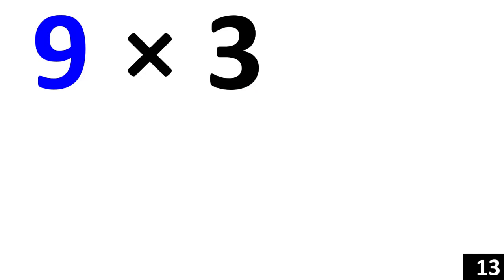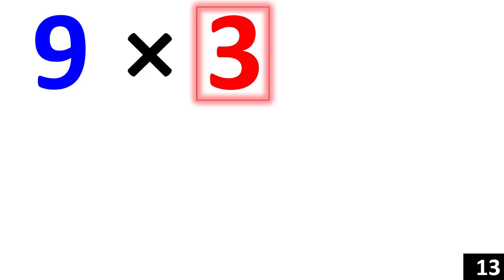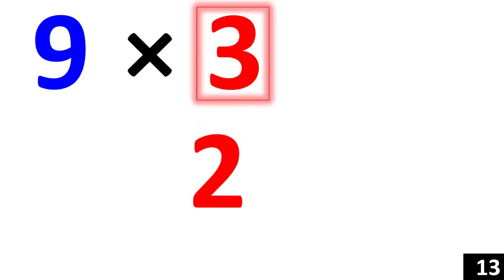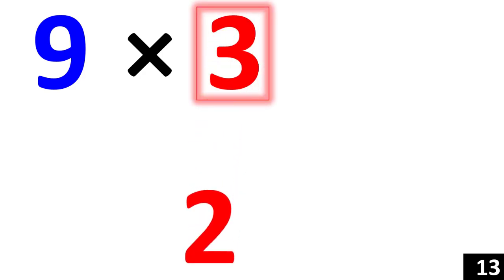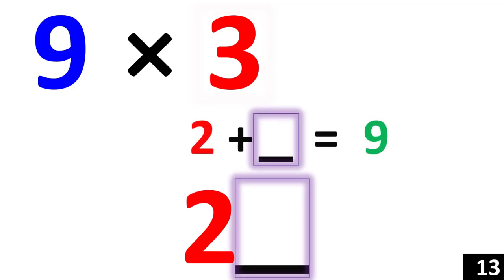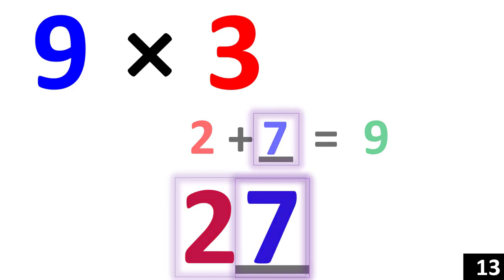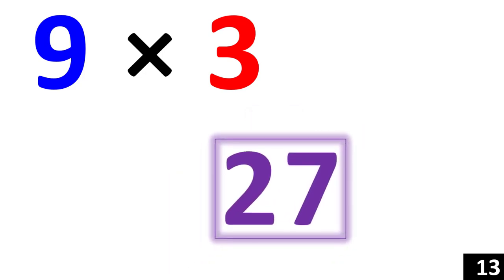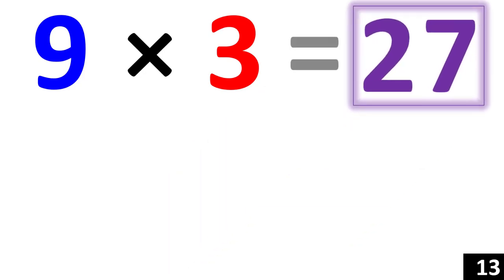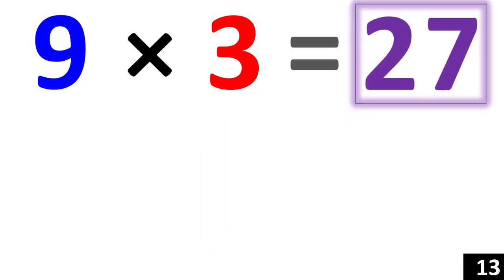9 times 3. Starting from the number 3, 1 less than 3 is 2. Then we say, 2 plus what number would give us 9? 7. So, 7 is your second number and 27 is your answer.